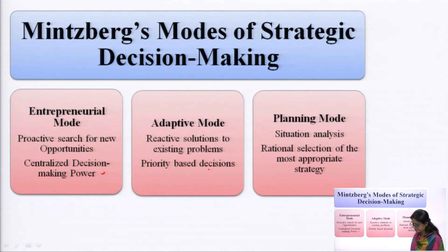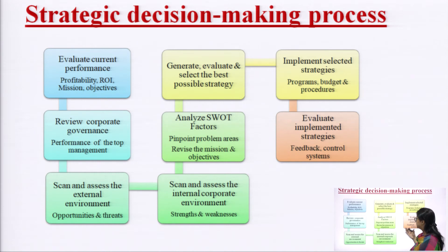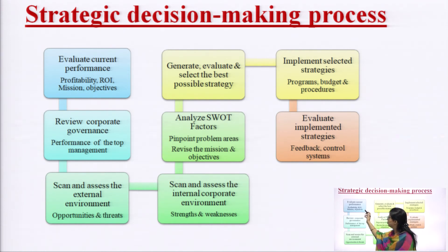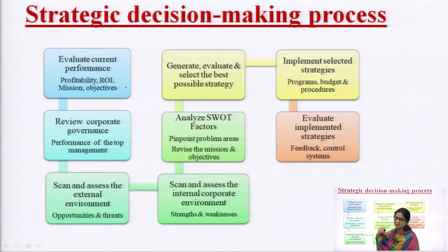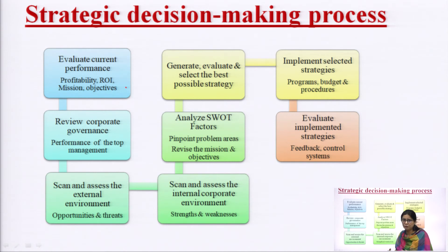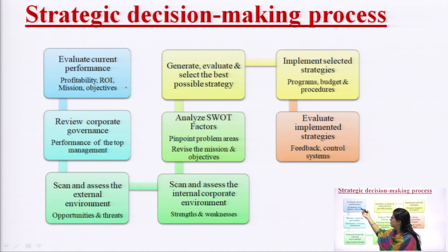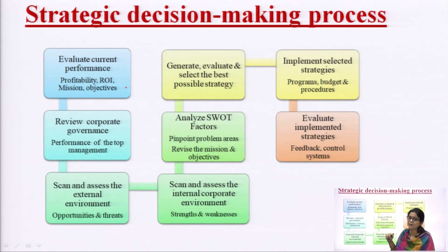Now here comes the strategic decision making process. The first step is to evaluate where you are standing — your current performance. Current performance may be measured in terms of profitability or return on investment, and whether you are achieving your mission, objectives, and goals. So the first step in the strategic decision making process is: where are we standing and what is our current performance?